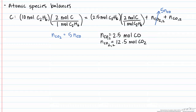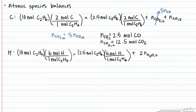The next balance is the hydrogen balance. In a combustion reaction, I always save the oxygen balance for last, because oxygen appears in so many of the components. For our hydrogen, we have 10 moles of ethane coming in with 6 hydrogen atoms per mole of ethane. This equals 2.5 times 6, plus 2 times the number of moles of H2O, since there are 2 hydrogen atoms per mole of H2O. We can solve for the number of moles of H2O, which equals 22.5 moles.